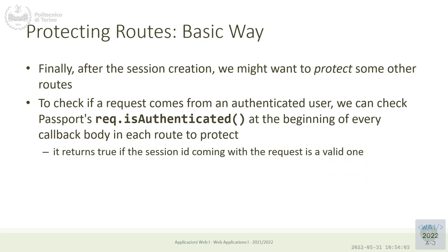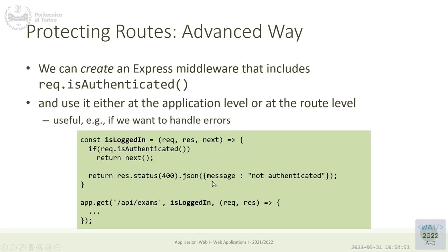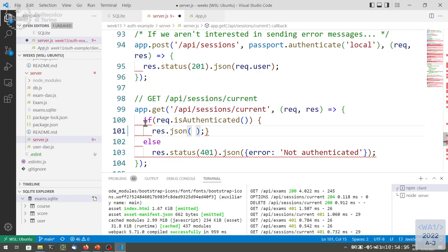Inside the Express route, we have an additional method that is injected by the strategy which is called isAuthenticated. This is a function that returns a boolean value. If the authentication is valid — meaning that in the session we have a valid user stored, which implies that in the past we did a successful verification — Passport populates request.user and gives us this isAuthenticated function.